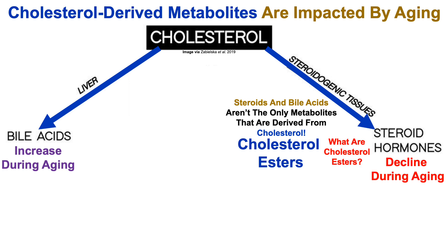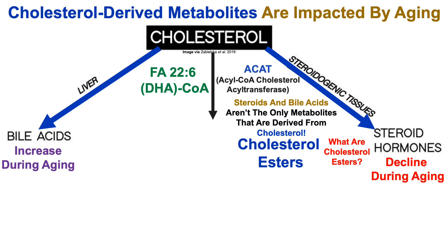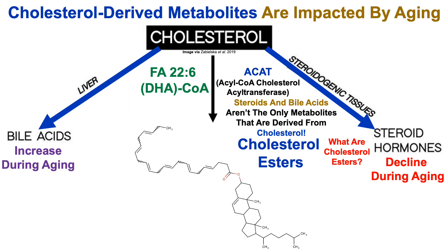So what are cholesterol esters? In the presence of fatty acid 22:6 — which has 22 carbons and 6 double bonds, also known as the fish oil fatty acid DHA — when that DHA is bound to coenzyme A (activated), and in the presence of the ACAT protein (acyl-CoA cholesterol acyltransferase), we get a cholesterol ester.